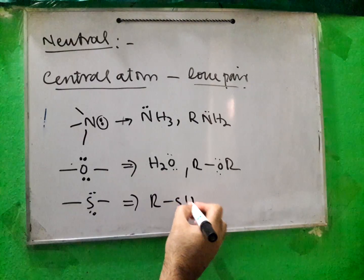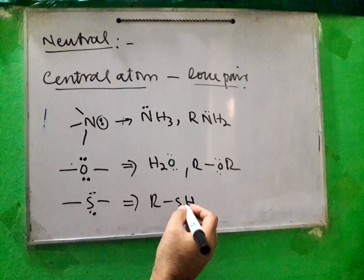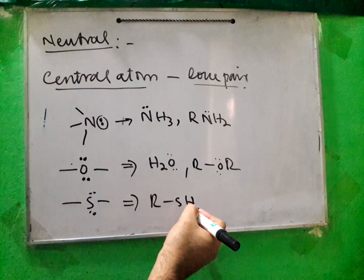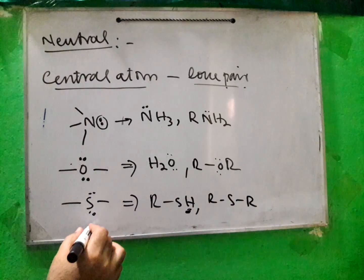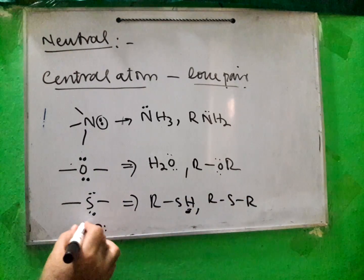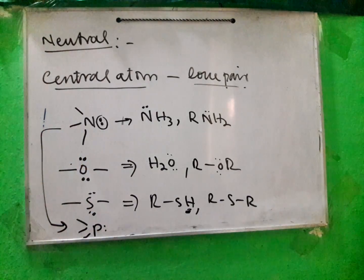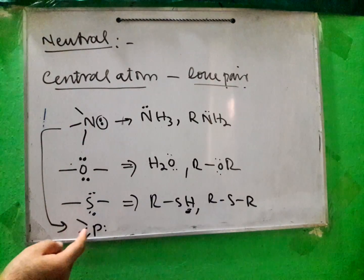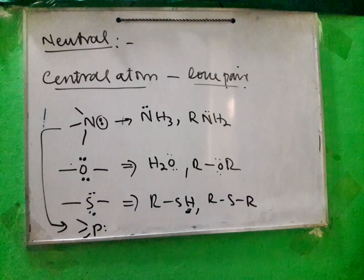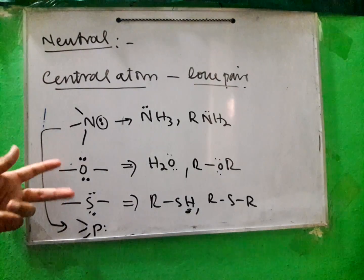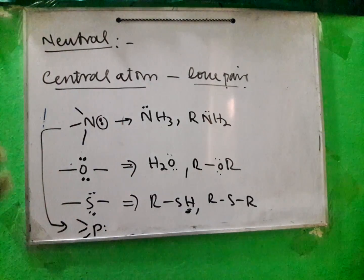RSH is another example — sulfur acting like oxygen. Phosphorus acts like nitrogen: they are in the same group and have the same properties. Similarly, oxygen and sulfur have the same properties. Nitrogen and phosphorus can make the same kinds of nucleophiles, and oxygen and sulfur also behave similarly as nucleophiles.